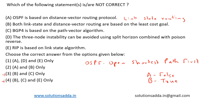So option 2, A and B only, can also be eliminated. Now option C: BGP4 is based on path vector algorithm. BGP stands for Border Gateway Protocol, and it is indeed based on the path vector algorithm. So option C is true.